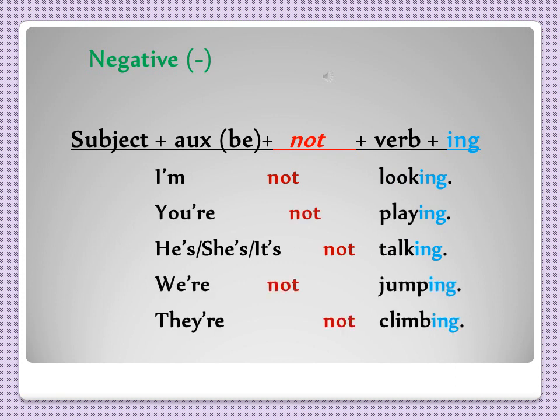The negative form is almost the same as the affirmative. We add 'not' after the auxiliary: I am not looking, you are not playing, he is not talking, she is not talking, it is not talking, we are not jumping, they are not climbing. All we do is add 'not' between the auxiliary and the verb.